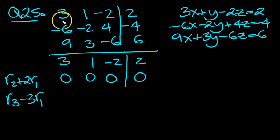So 9 take 3 are 1s. 9 take 9 is 0. 3 take 3 of those is 0. Minus 6 take 3 of those is plus 6. So that will be 0. And 6 take 3 of those. 6 take 6 is 0.